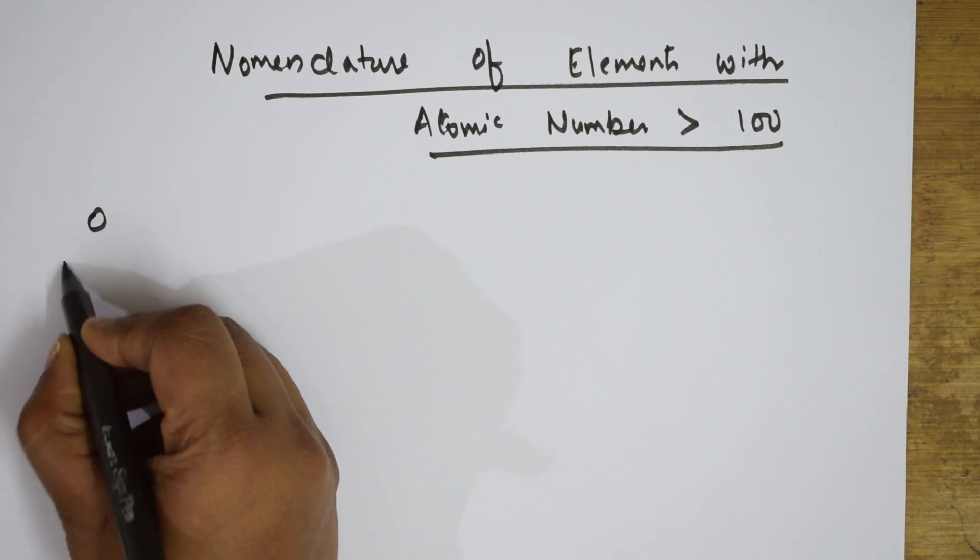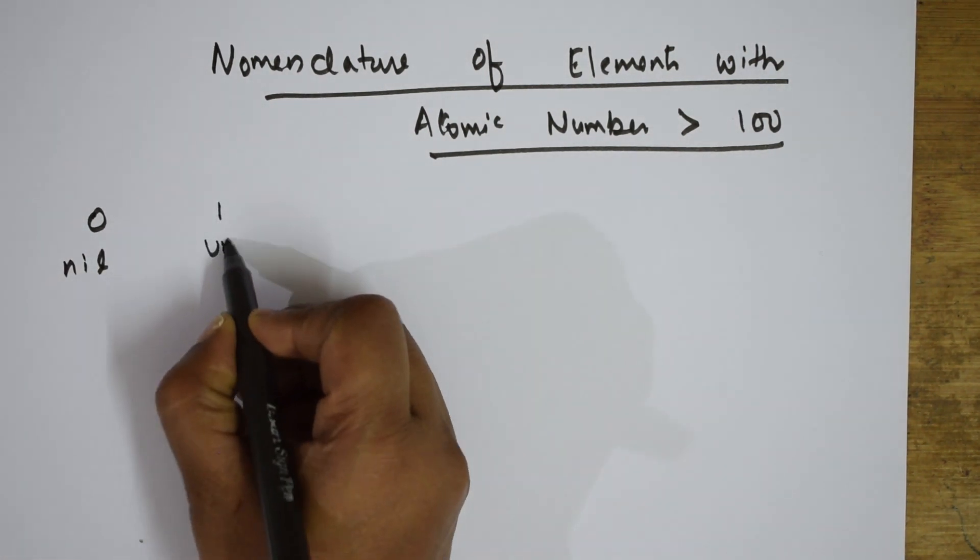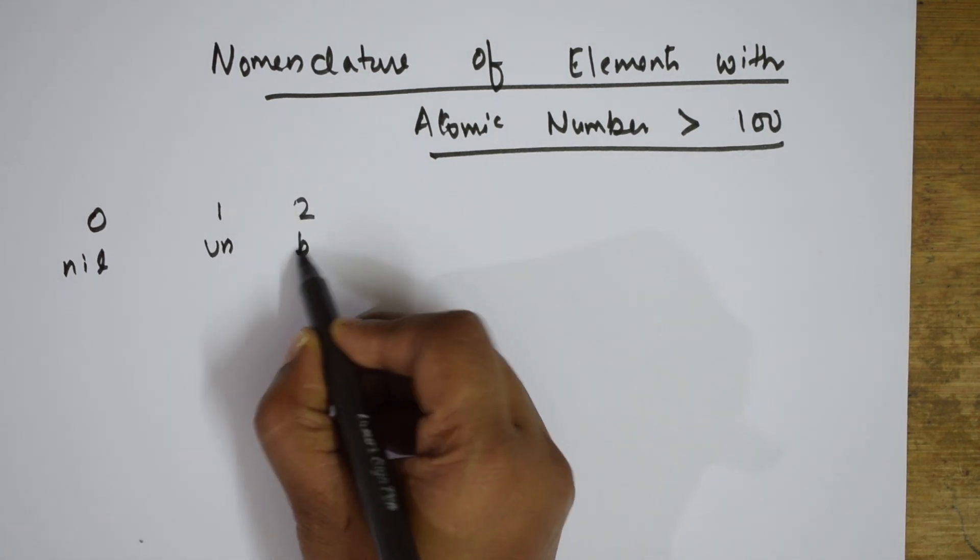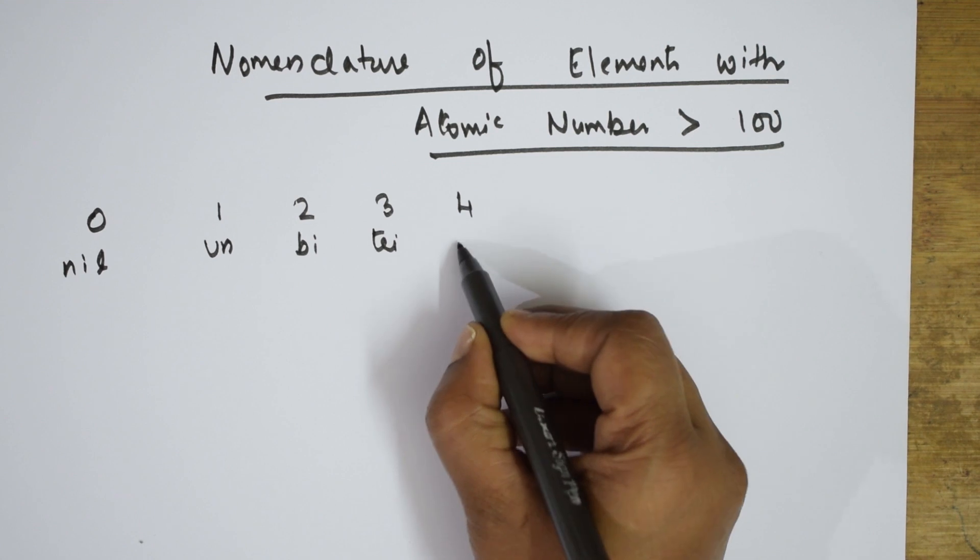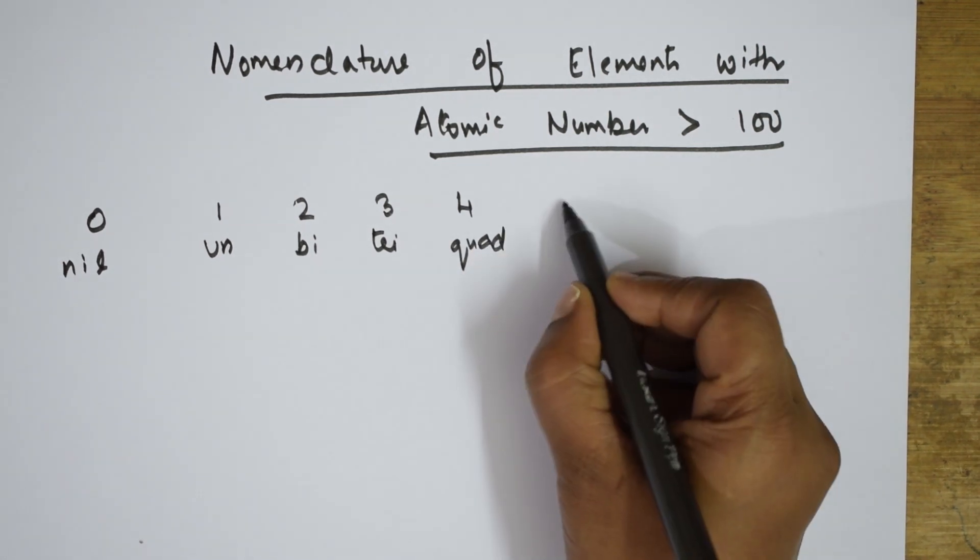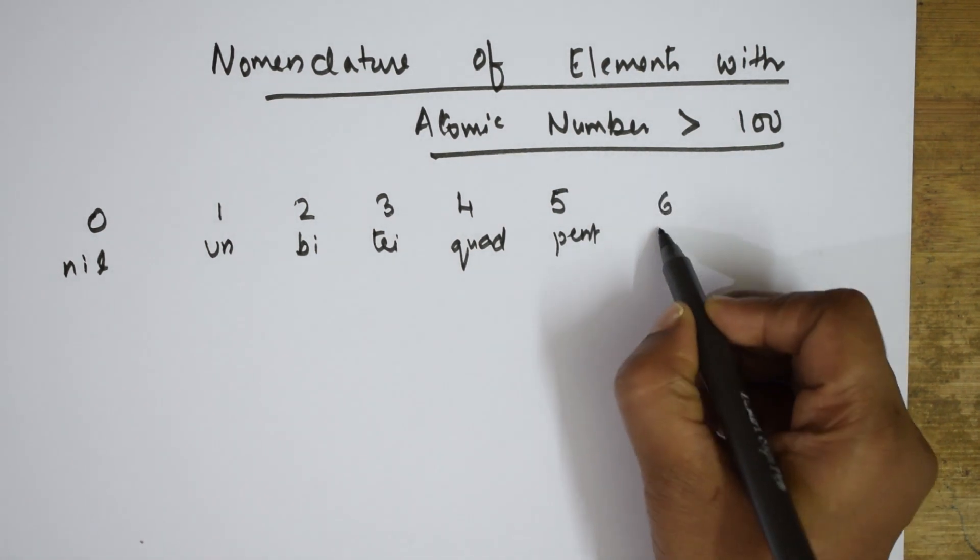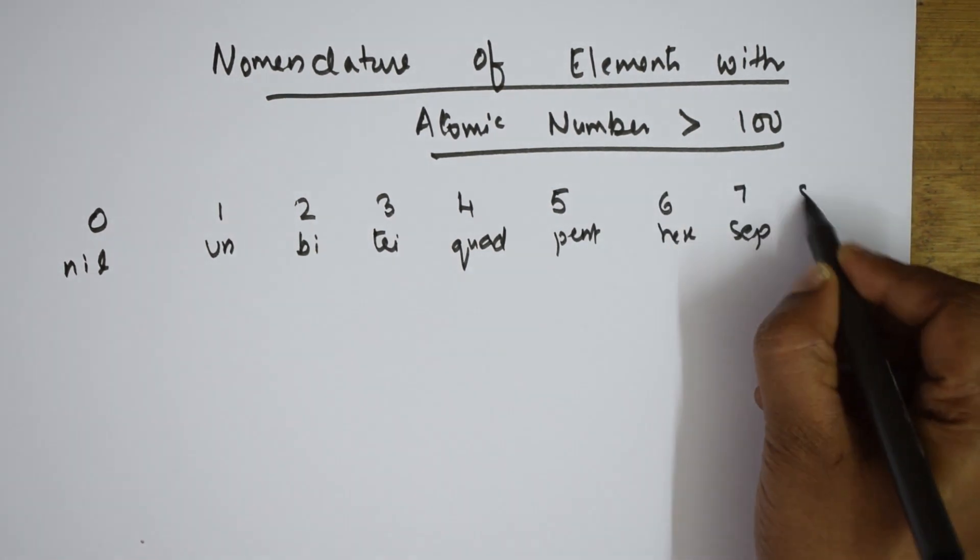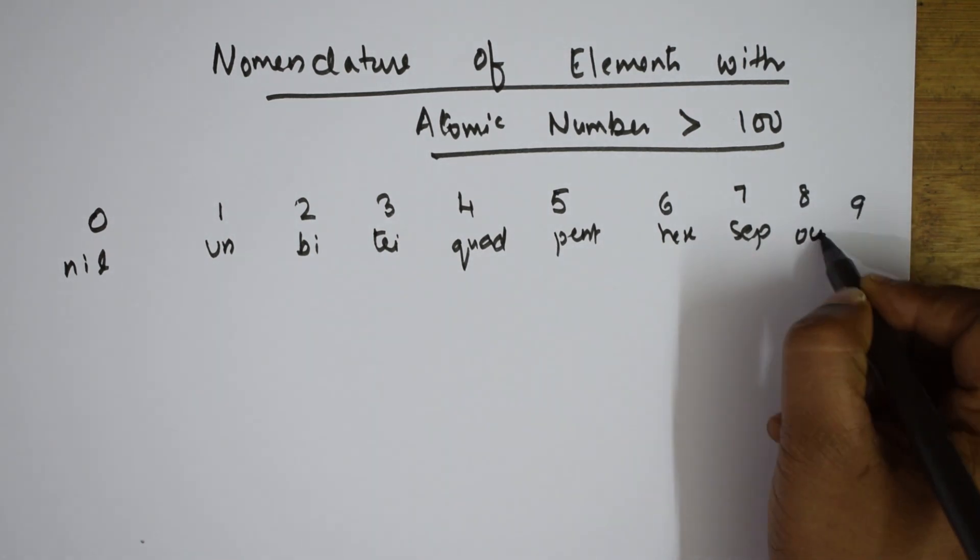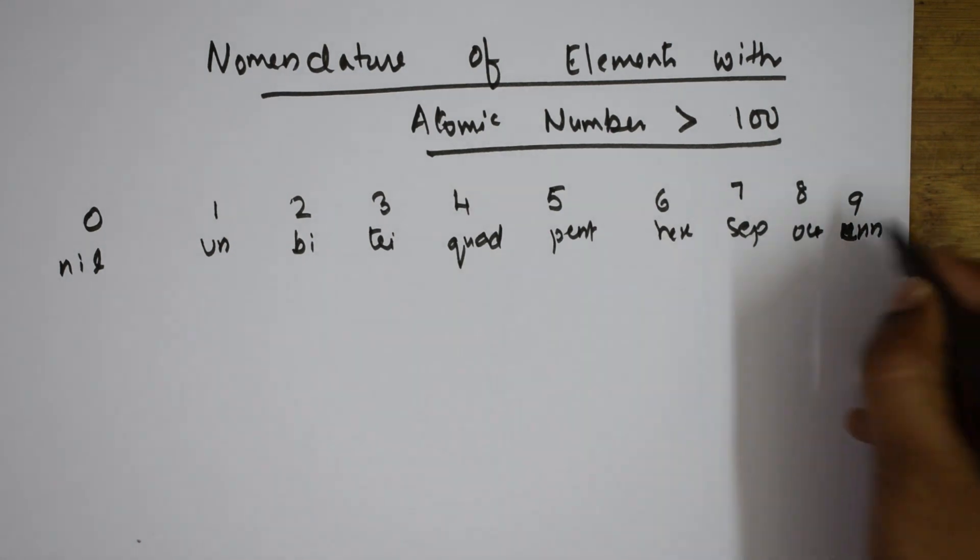For 0, we use nil. For 1, un. For 2, bi. 3 means tri. 4 is quad. 5 is pent. 6 is hex. 7 is sept, 8 is oct, and 9 is nen.